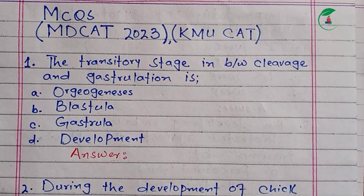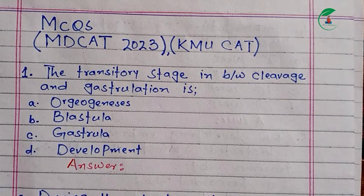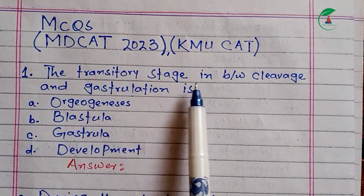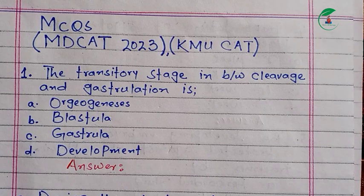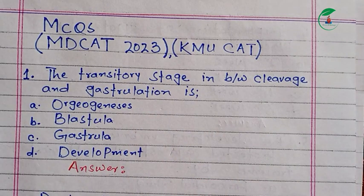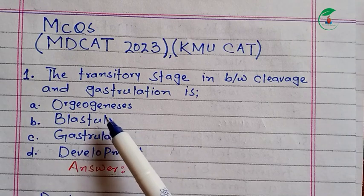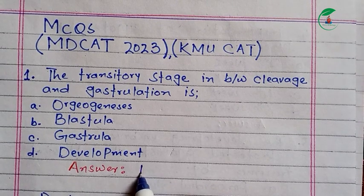The transitory stage in between cleavage and gastrulation is the blastula stage. The options are Arginogenesis, Blastula, Gastrula, and Development. The correct answer is that the stage between cleavage and gastrulation is the blastula.